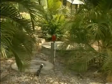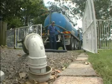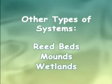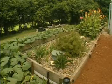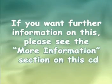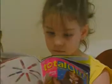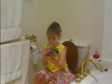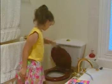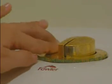We've now covered the main types of on-site sewerage facilities identified in this region. However, there are other types of treatment systems available, including reed beds, mounds and wetlands. If you want further information on this section, please go to the technical data sheets on this CD. The next section takes a look at how you can maintain your asset so that it continues to benefit your household, the community and our environment.